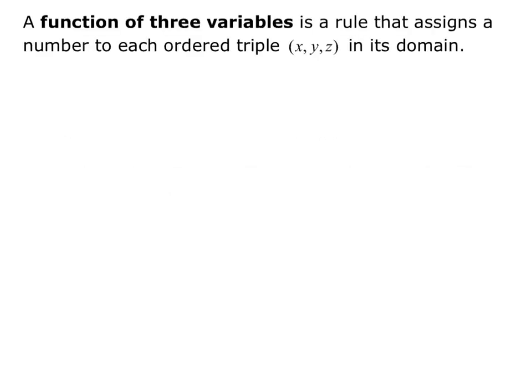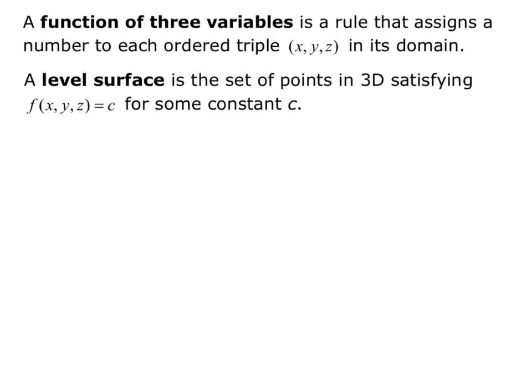A function of three variables is a rule that assigns a number to each ordered triple xyz in its domain. A level surface is the set of points in 3D satisfying f of xyz equals c for some constant c.